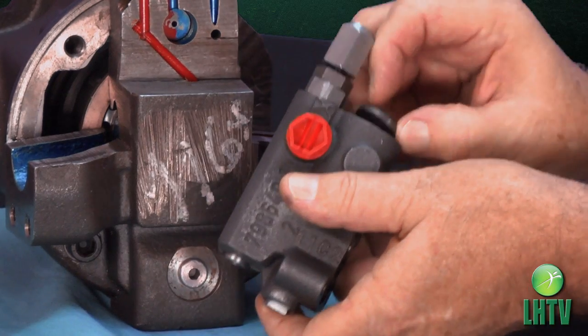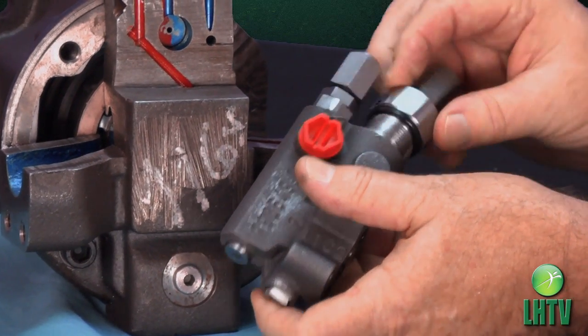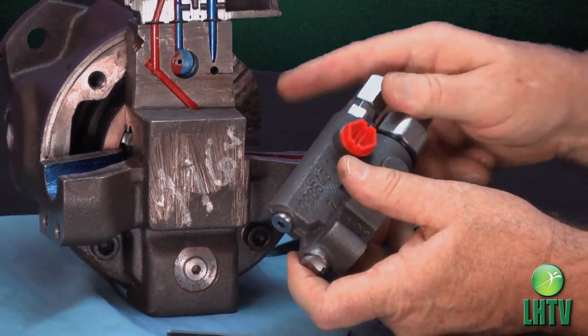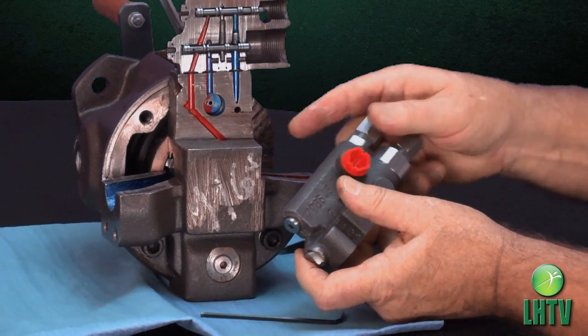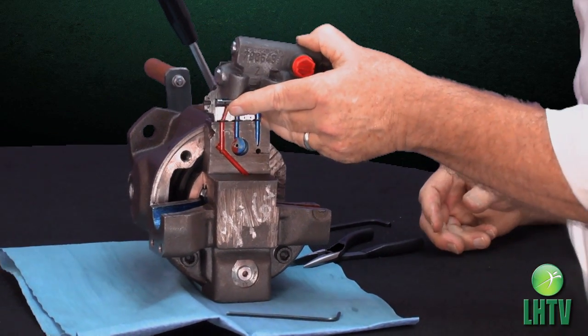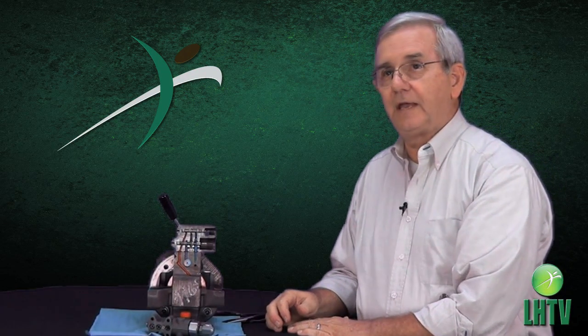Don't forget your spring follower. Tighten all this back down, control goes back on the pump, and you have now solved your cavitation problem on your A10 VSO pressure compensated pump.